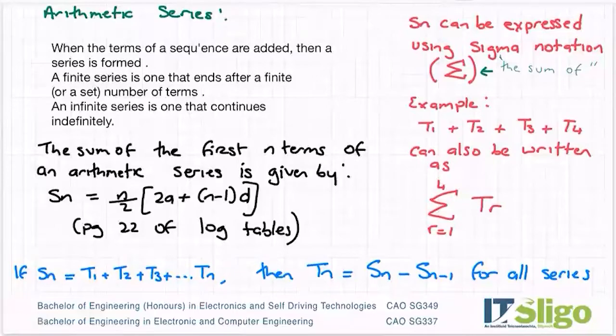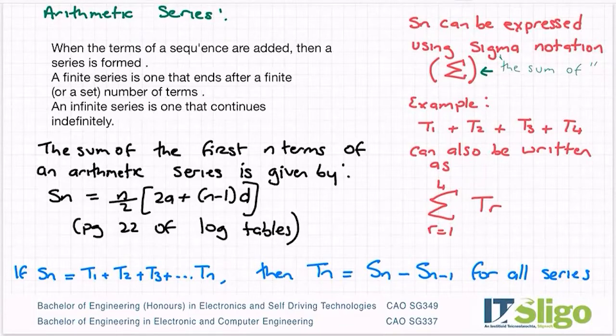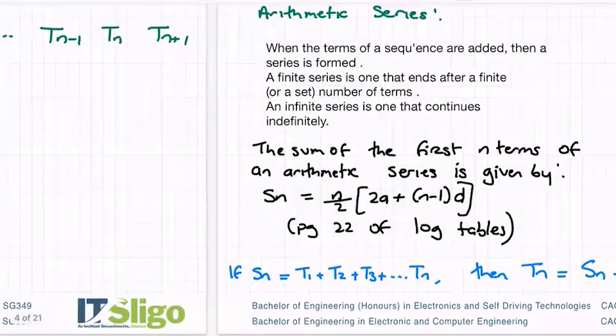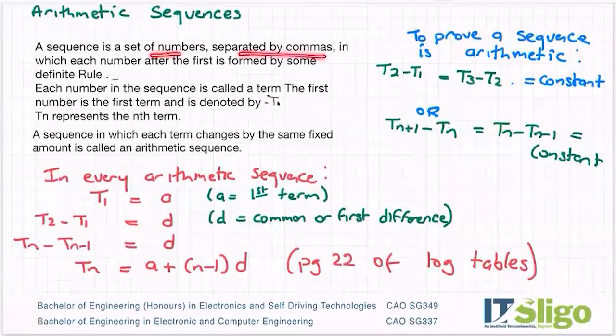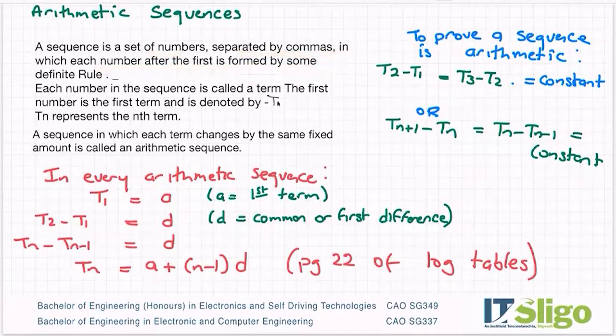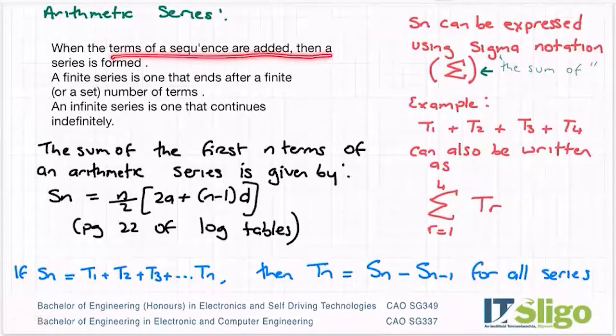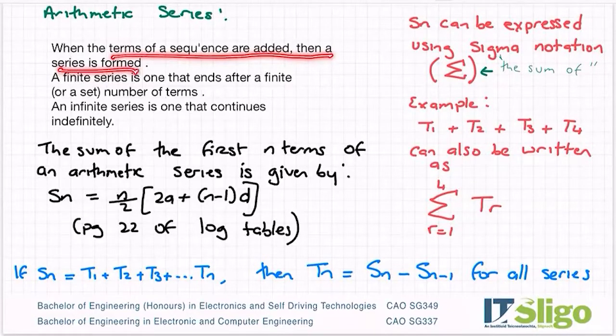So an arithmetic series then, because this chapter in many books is called Sequences and Series and Patterns. So over this class and the next one, I'm just going to explain briefly what is meant by all of them. So remember what a sequence was. It was a set of numbers separated by commas in which each number after the first is formed by some definite rule. So in an arithmetic sequence, we are adding or subtracting the same amount every time. So what's a series then? Well, when the terms of a sequence are added together, a series is formed. So that's all a series is.